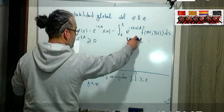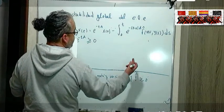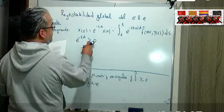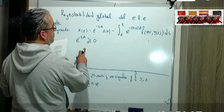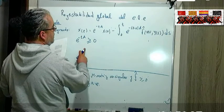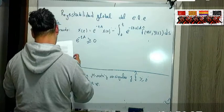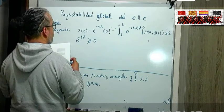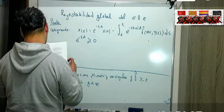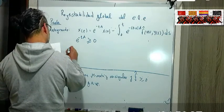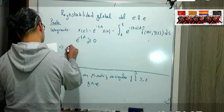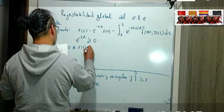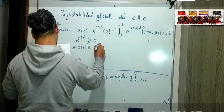Entonces esta de acá, como f gorro es mayor o igual que 0 en todos los valores posibles y esta de aquí tiene valores positivos o 0 también valores no negativos, entonces esta expresión ya nos indica que todos los valores de la x son no negativos.